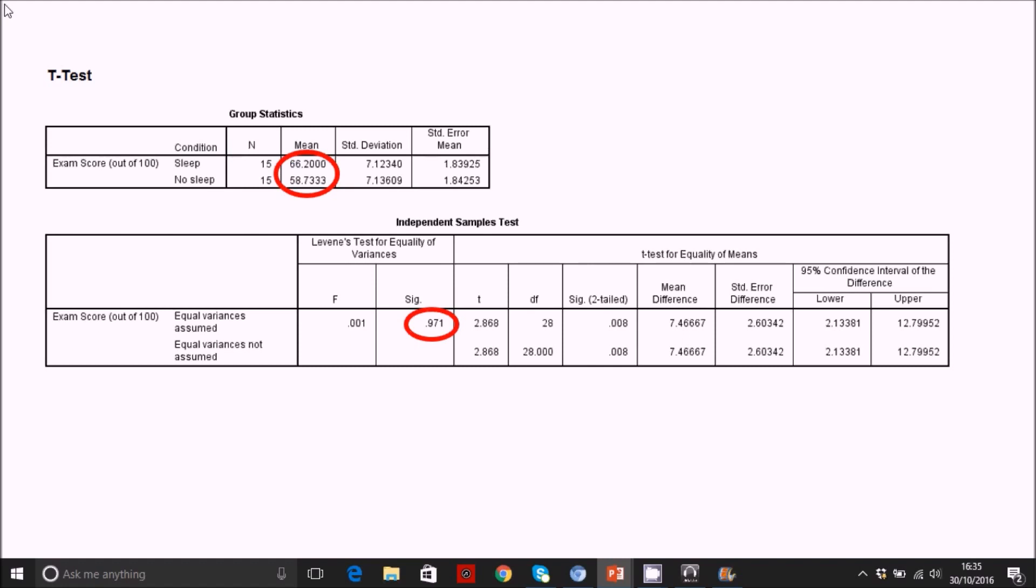Next we go to the next table. First check the Levene's test for equality of variances. This is the test to determine whether we've got equal variances across the groups or whether the variances are unequal. What you're looking for here is a non-significant p-value. If it's not significant, which in this case it is at 0.97, so not significant, which basically means there's no statistically significant difference in the variances between the two groups. If this was significant, that means the variances between the two groups are different and they're statistically significantly different.